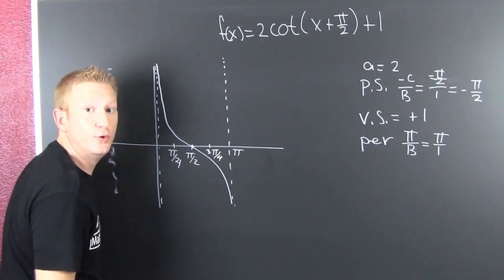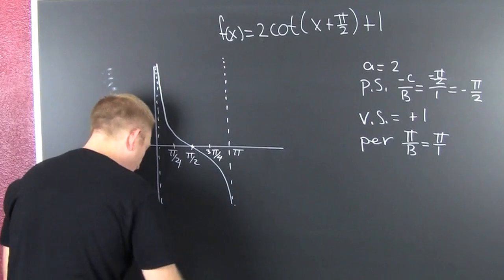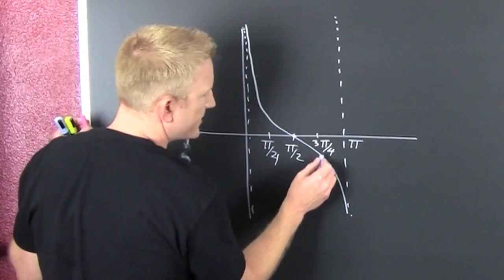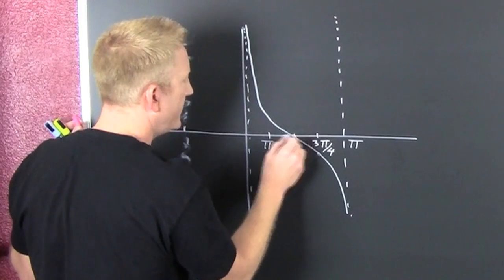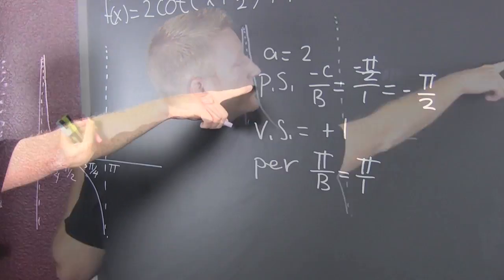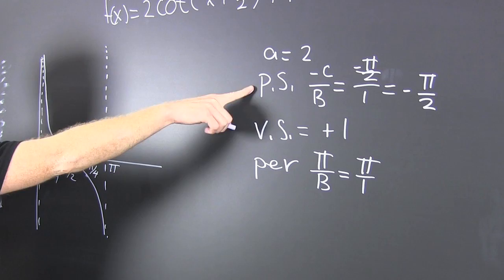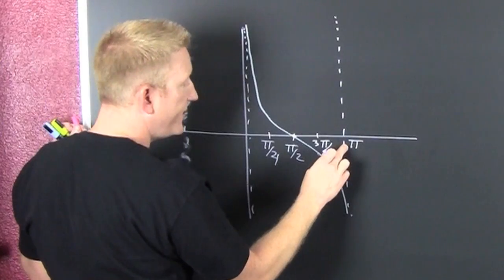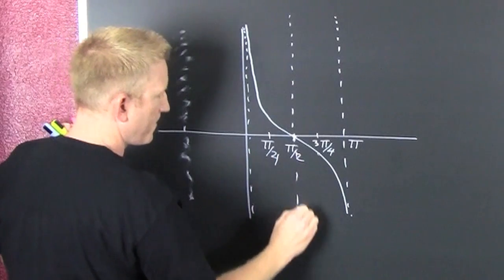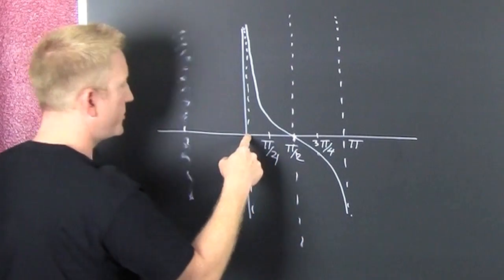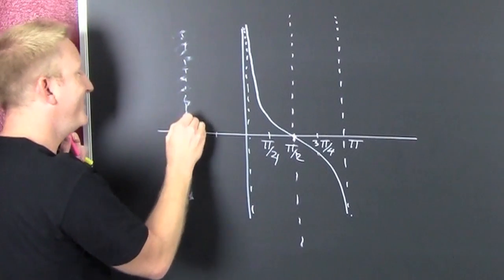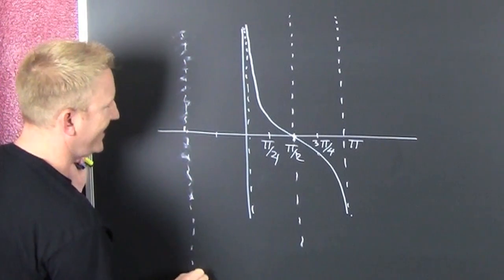And then I need to move it — move it. I'm going to take all of these special points and my asymptotes and move them. First I do my phase shift of pi over two to the left. I move this asymptote over pi over two — there's pi over four, and here's pi. Then I move each special point over pi over two.